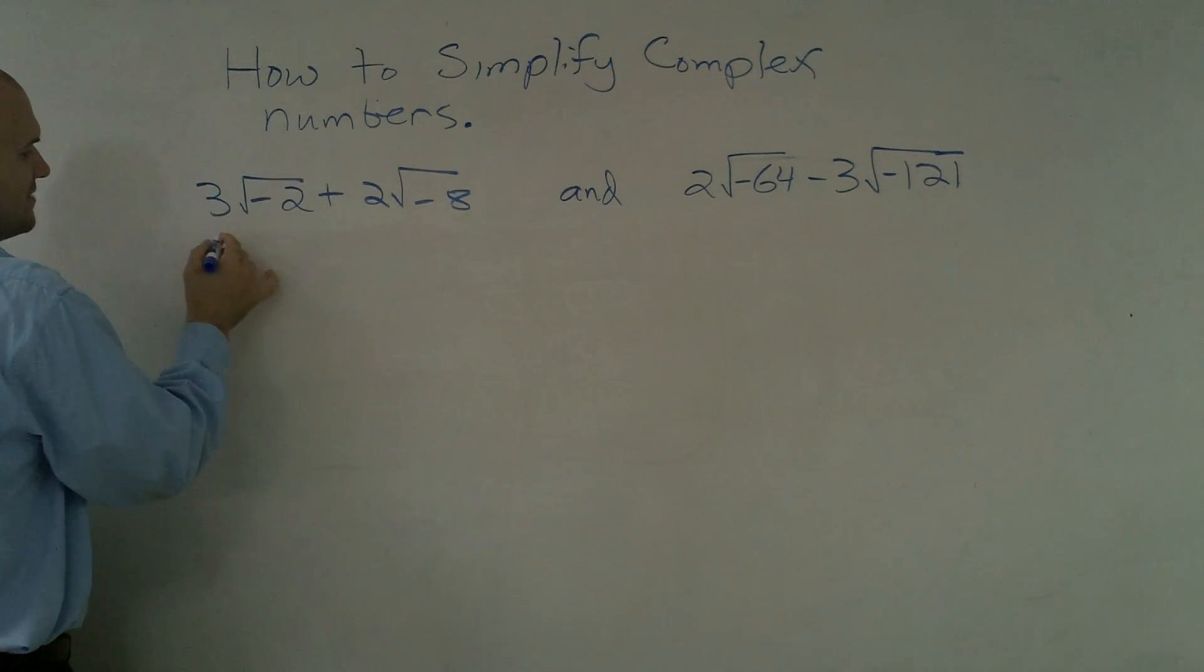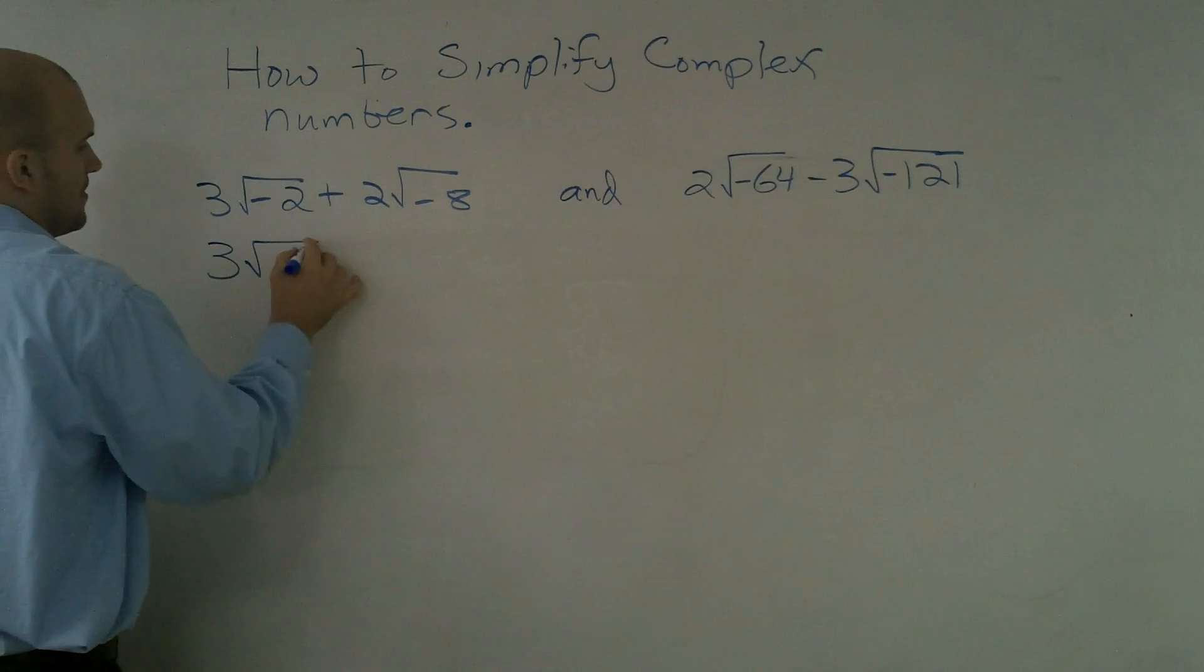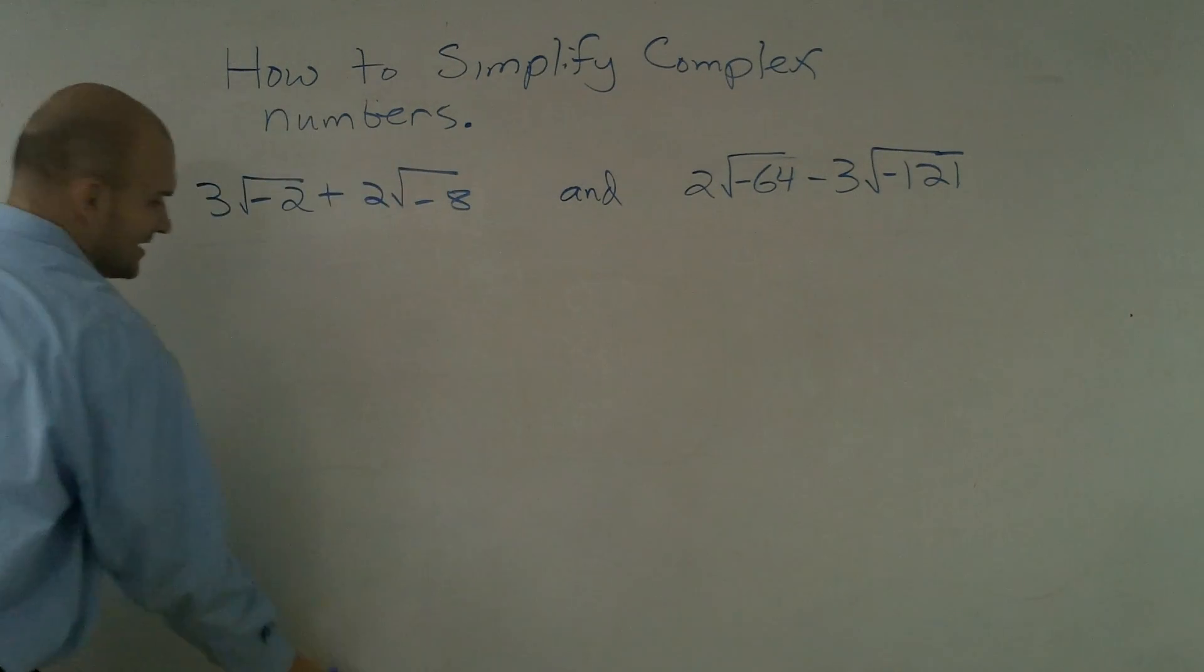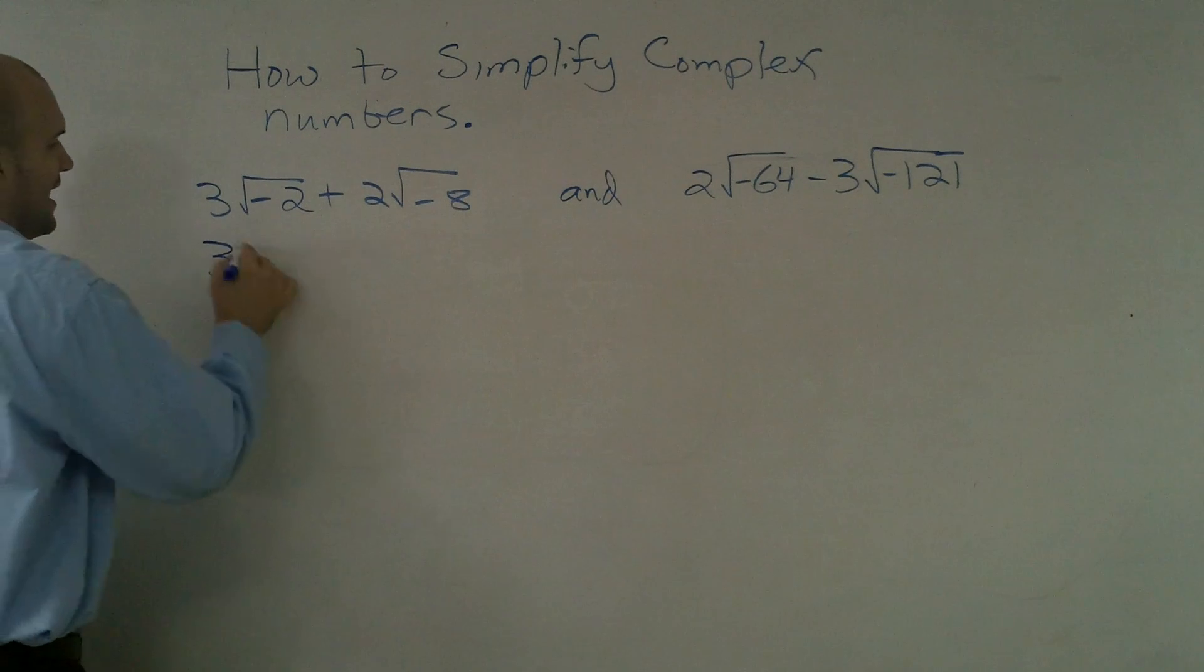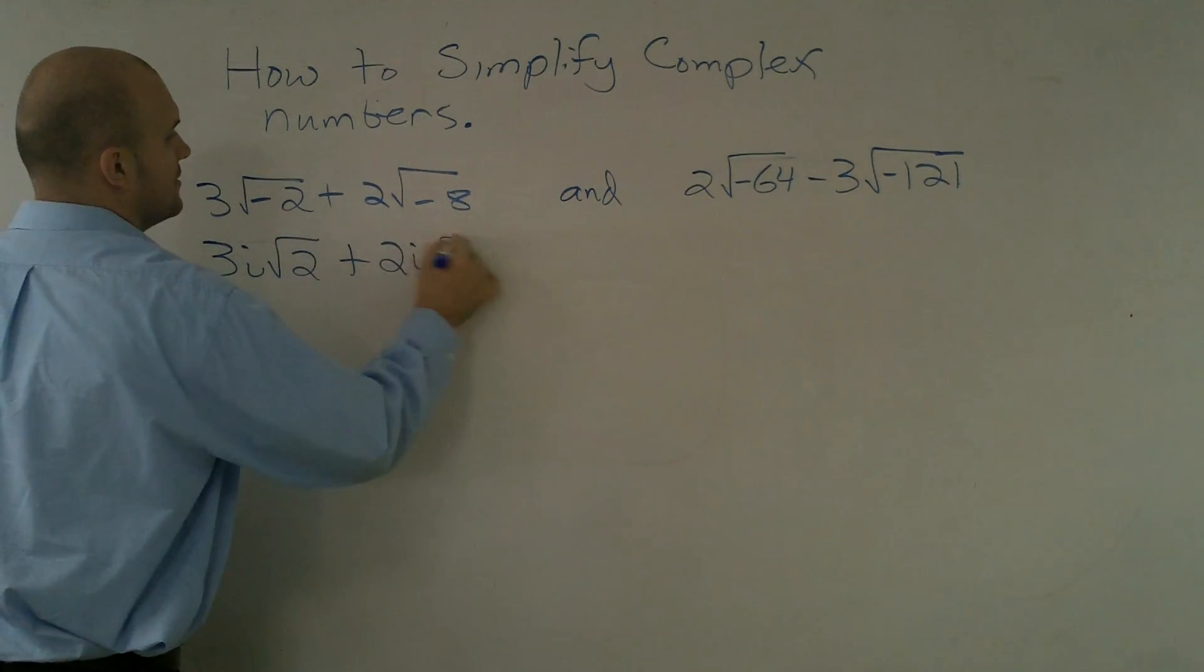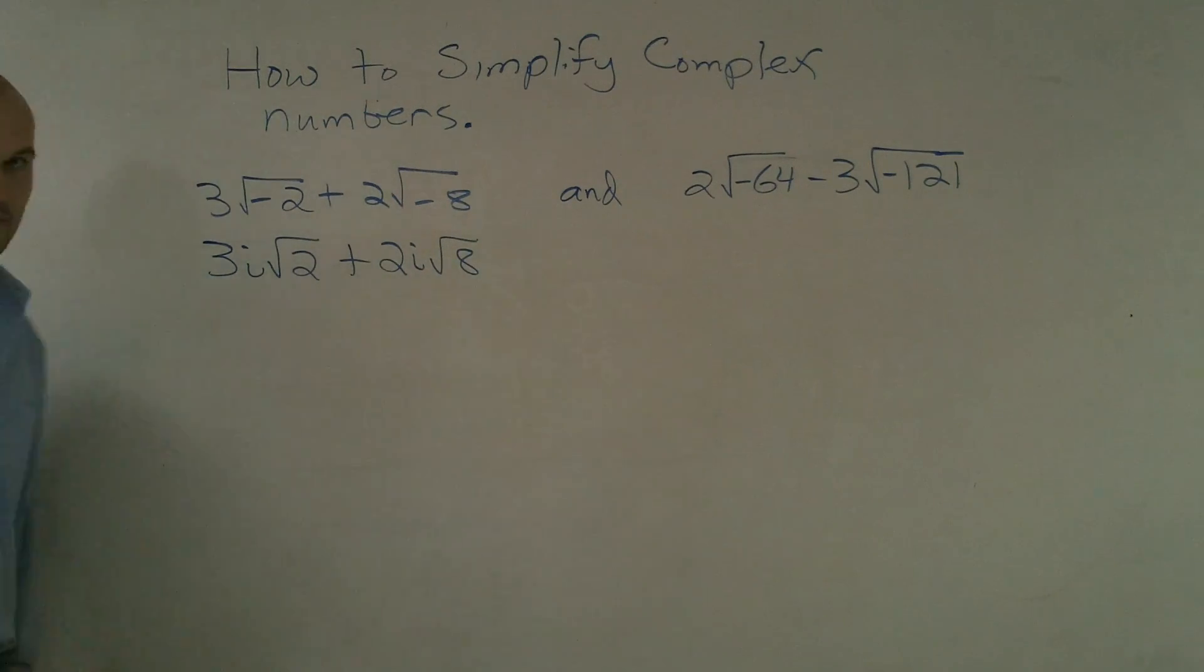So first of all, I'm just going to take out the negative sign for each one of these equations. When I take out the negative sign, it's going to come 3i plus 2i square root of 8. Now, I have to go and take a nice little flashback and look back into how do I simplify my radicals.